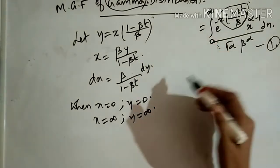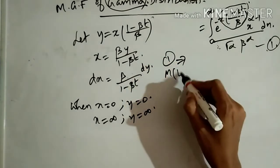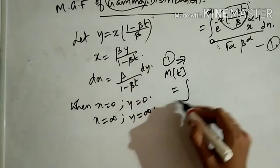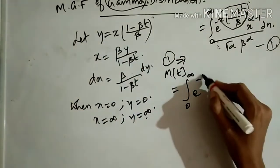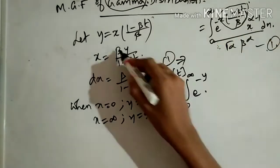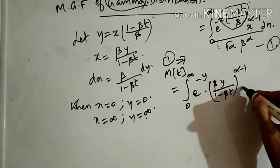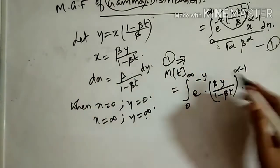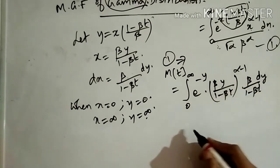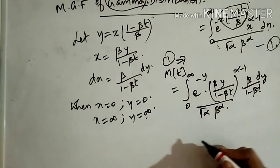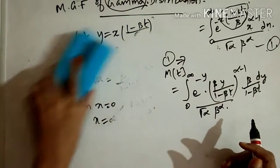So M(t) equals the integral from 0 to infinity of e^(-y) times (βy/(1 - βt))^(α-1) times β/(1 - βt) dy, divided by Γ(α) β^α. Now we simplify this expression.